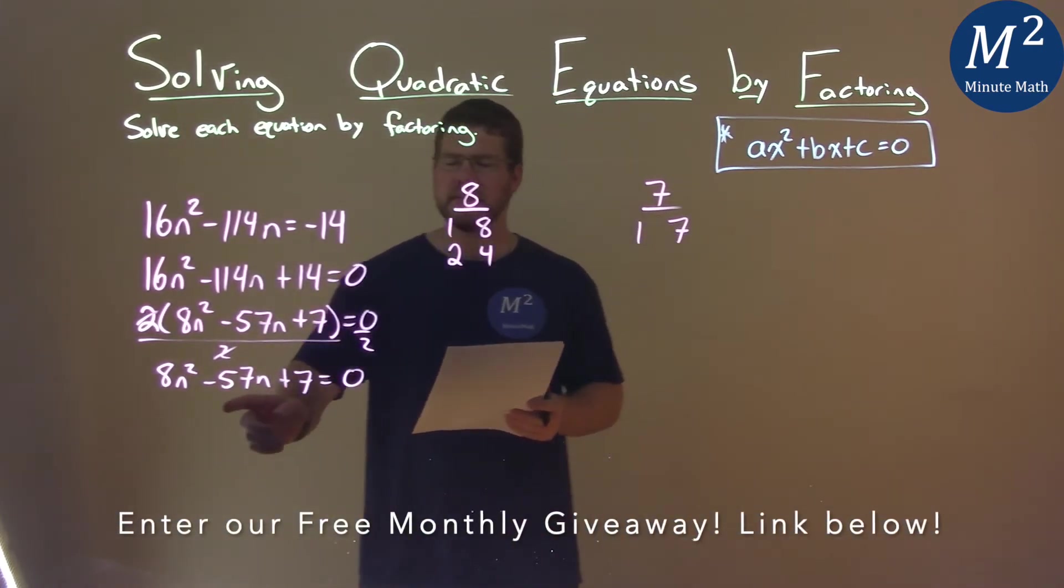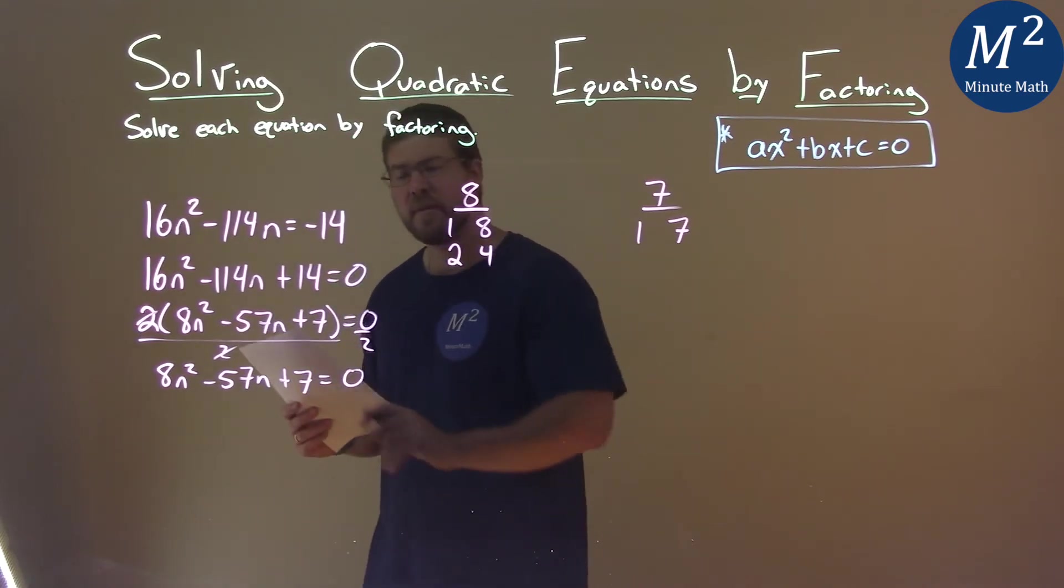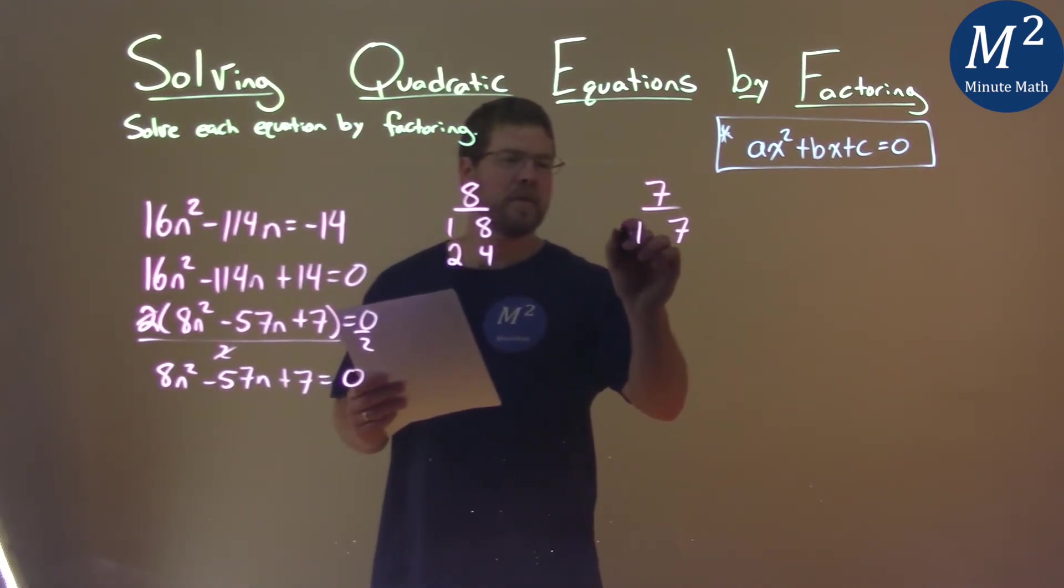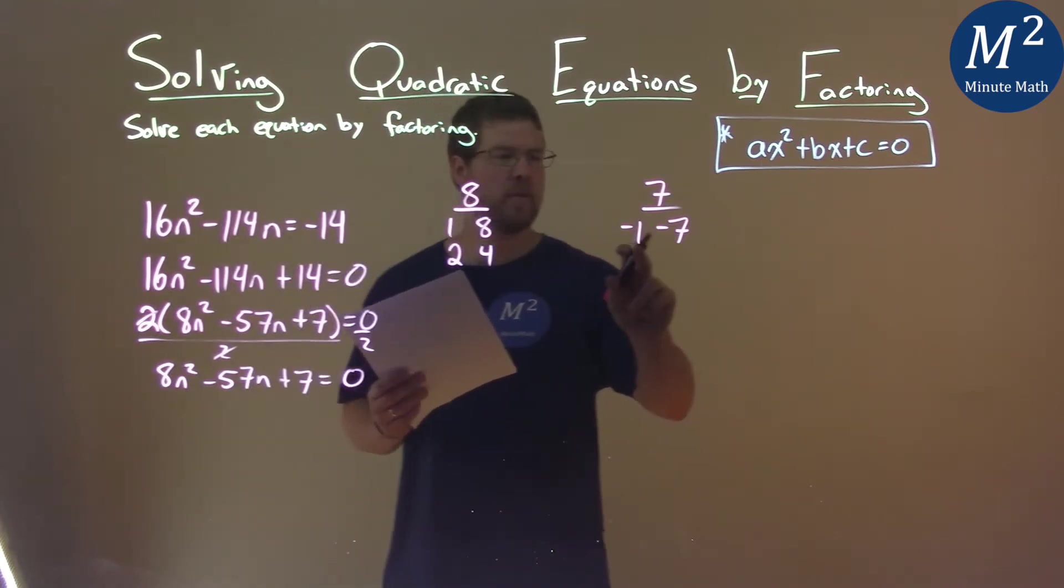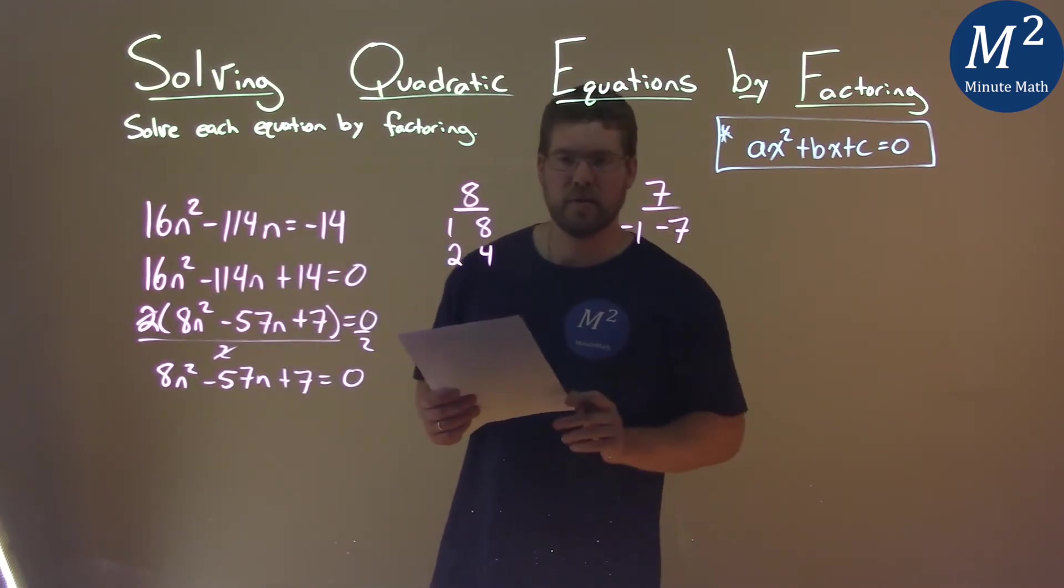Now my b value is a negative number, but my c value is a positive number, meaning both of these must be negative. Negative 1 times negative 7 is a positive 7.